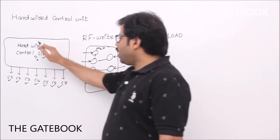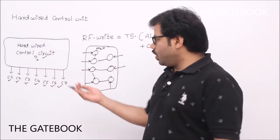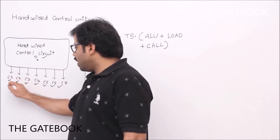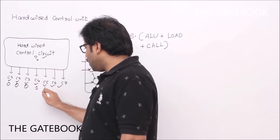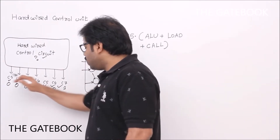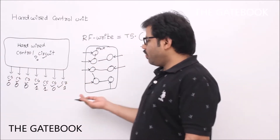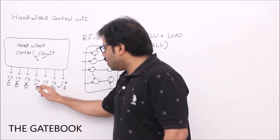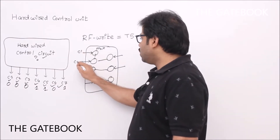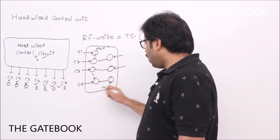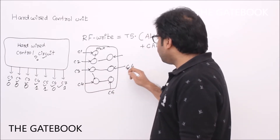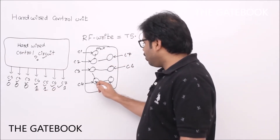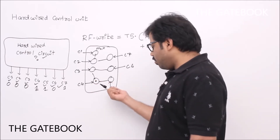This hardware control unit, for every clock cycle, will generate some signals. For example, c1 is 0, c2 is 0, c3 is 0, c4 is 1, c5 is 1, c6 is 0, c7 is 1 — such kinds of signals are generated. Every signal is a binary pattern, 0 or 1. These signals c1, c2, c3, c4 are connected to various parts of your circuit. If c4 is 1, that circuit will be enabled — whether it is a multiplexer or ALU or whatever.